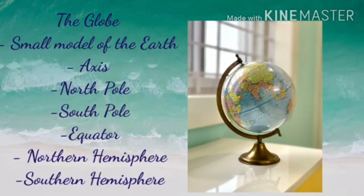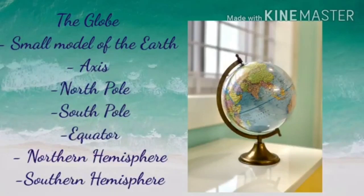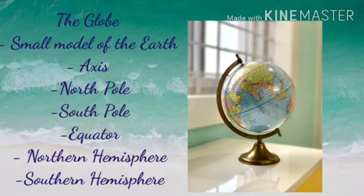How is the globe useful to us? A globe is a model of the earth. It shows us the shape and location of the continents, oceans and seas on a smaller scale. It also shows the shape and location of countries and the location of important cities. There are two points on which the globe rotates. The point at the bottom represents the south pole and the point at the top represents the north pole. An imaginary line running from one pole to the other through the center of the earth is called the axis.